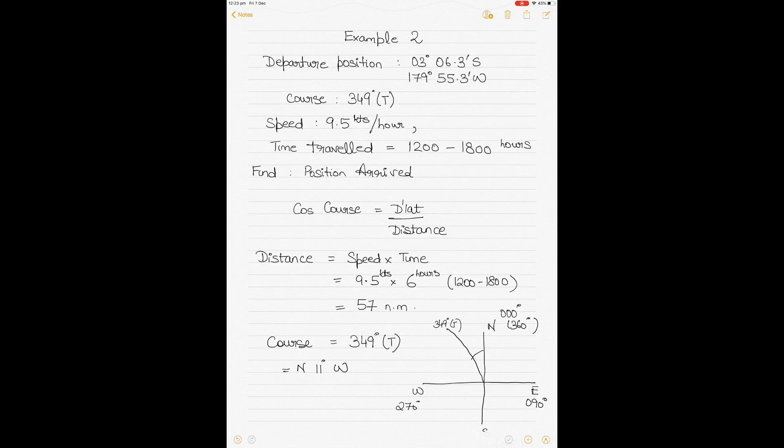The second example gives you a departure position, a course, and the speed of the vessel. The time of travel is given instead of distance—it's a bit of an indirect indication towards the distance, but we can make it work. We have to find the position arrived after traveling from 1200 to 1800 hours at a speed of 9.5 knots per hour on a course of 349 degrees true from the departure position.